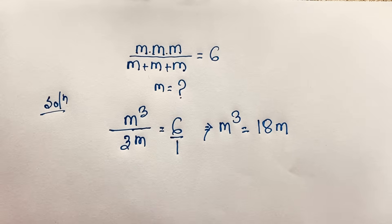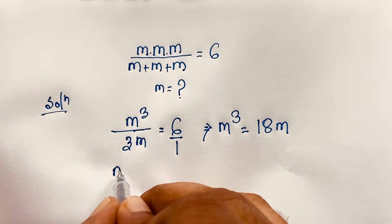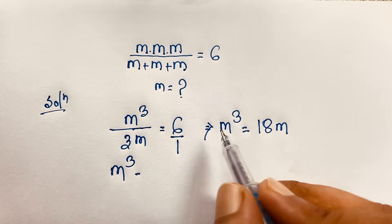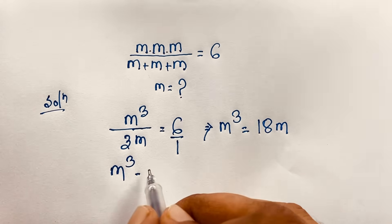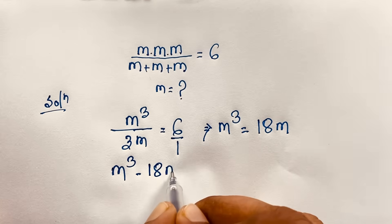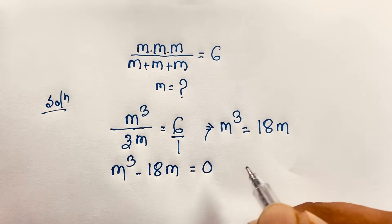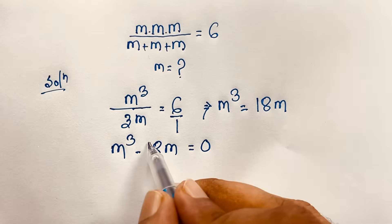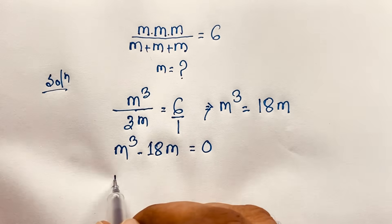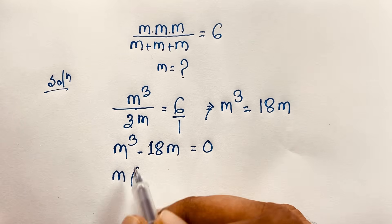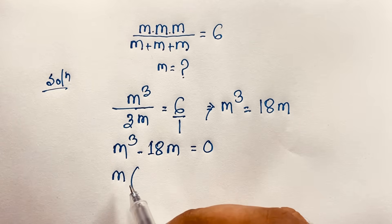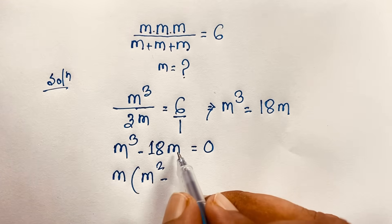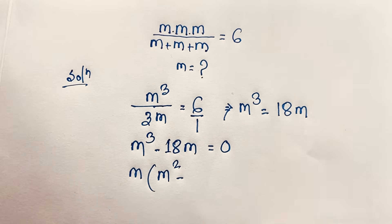That gives us 18m. Now you can see here m to the power 3 minus 18m — if I move this to the other side it will be negative — so m cubed minus 18m is equal to 0. You can see m is common, so if I take m as a common factor: m times (m squared minus 18) is equal to 0.